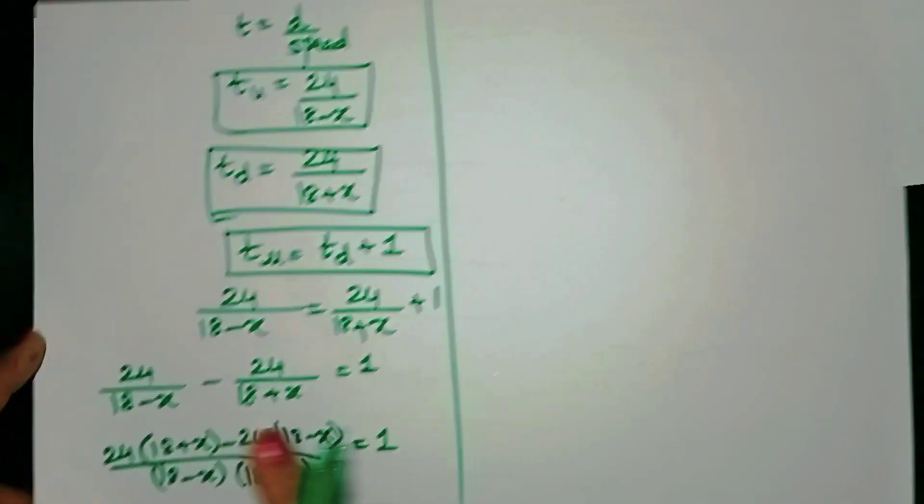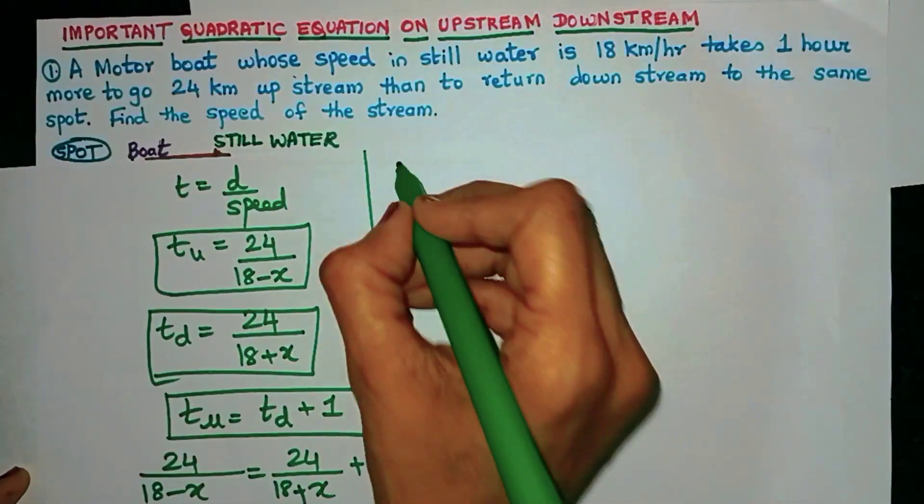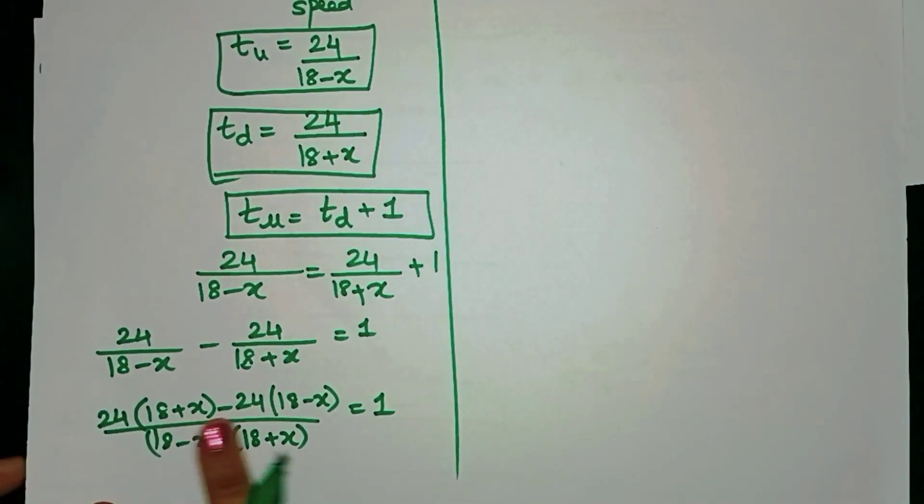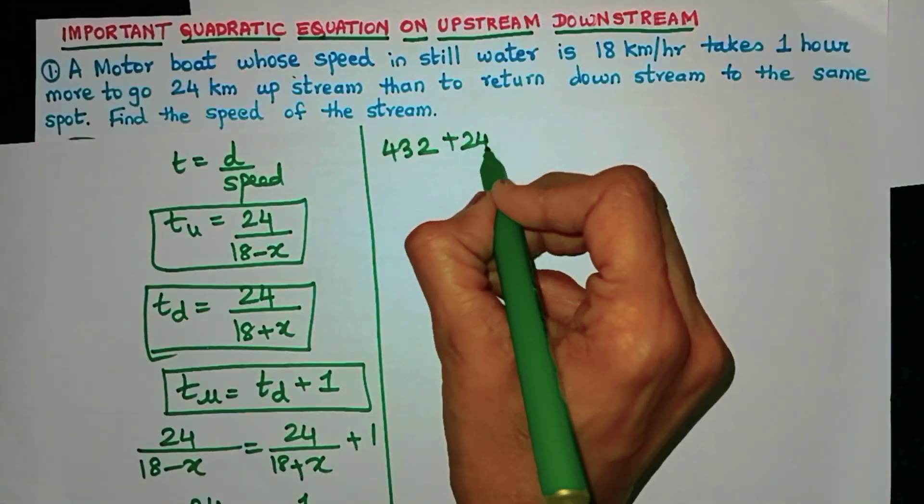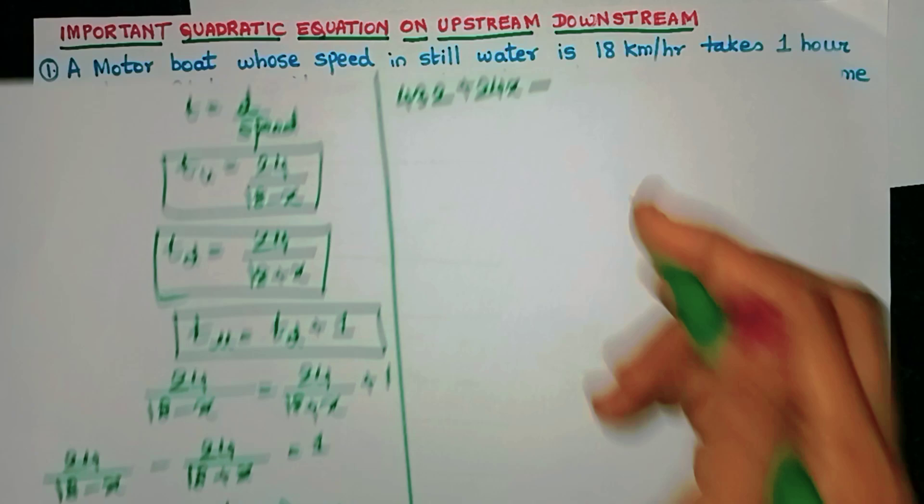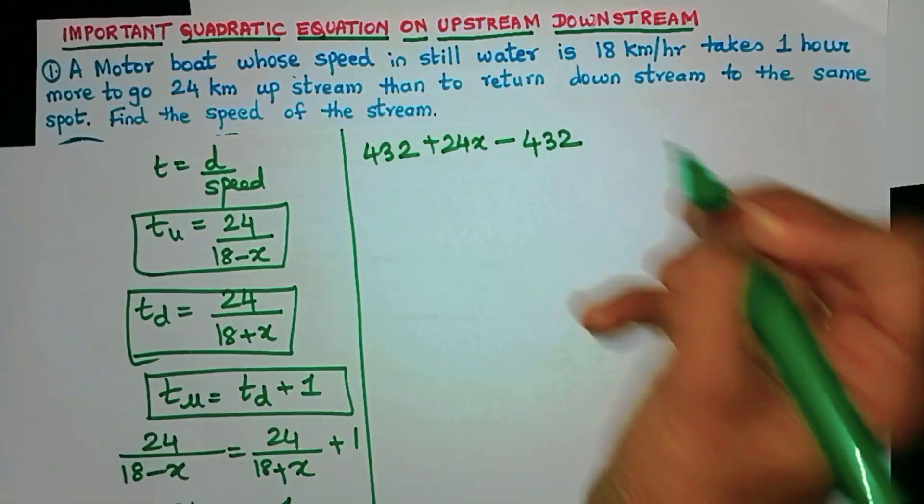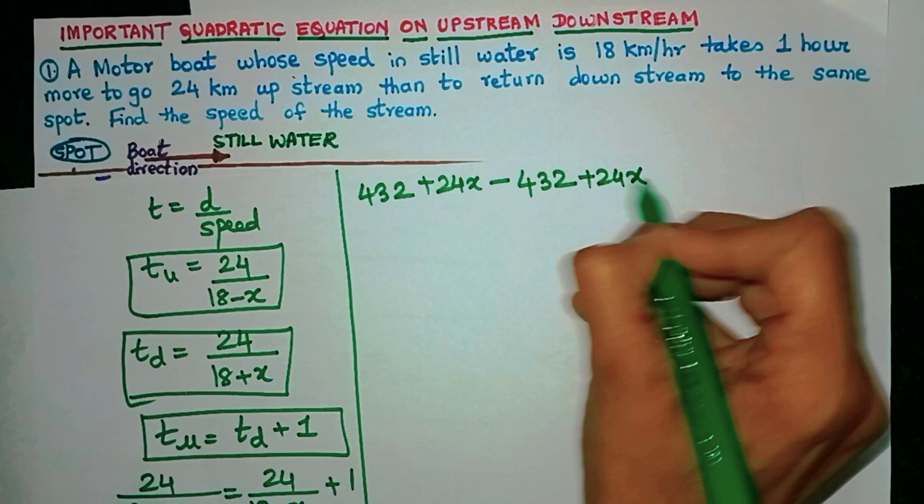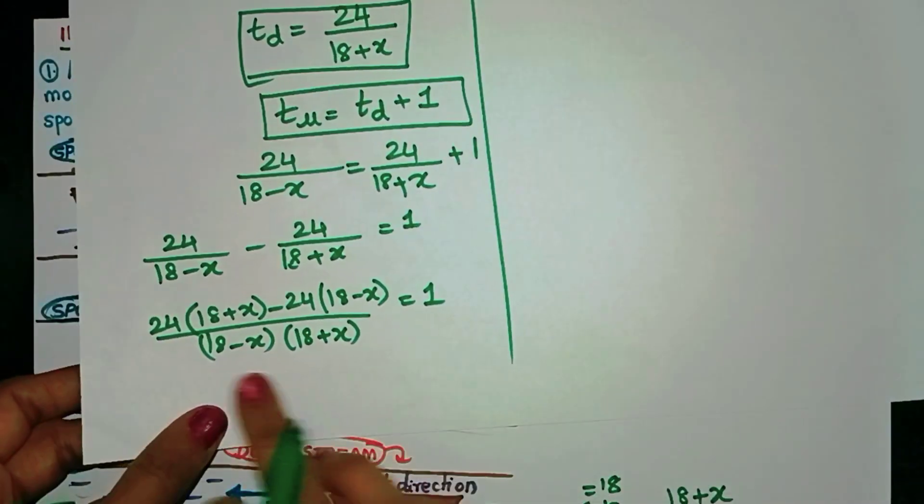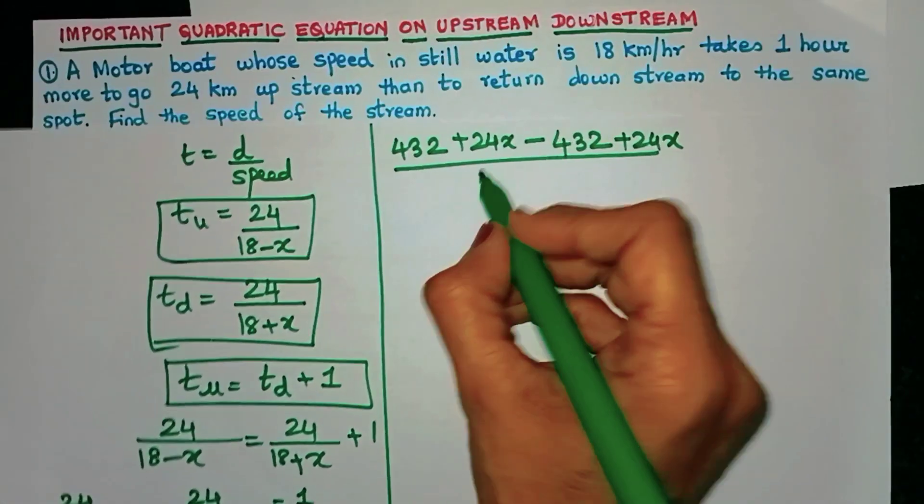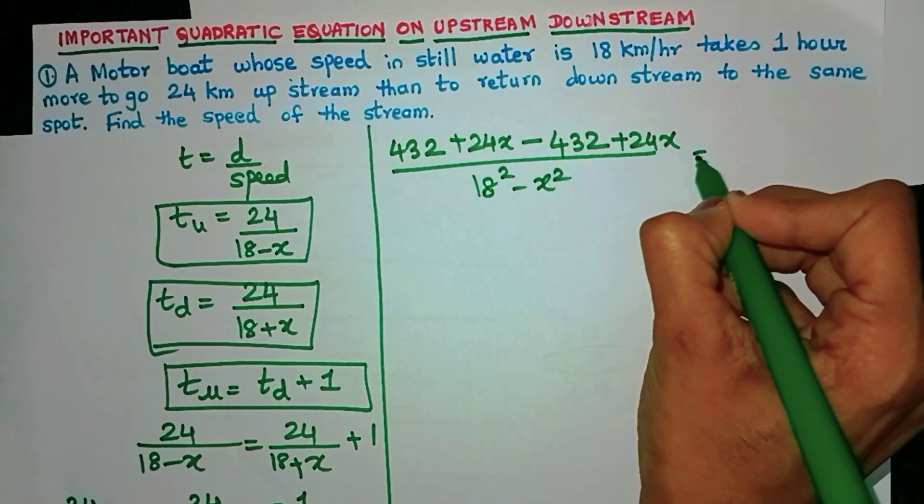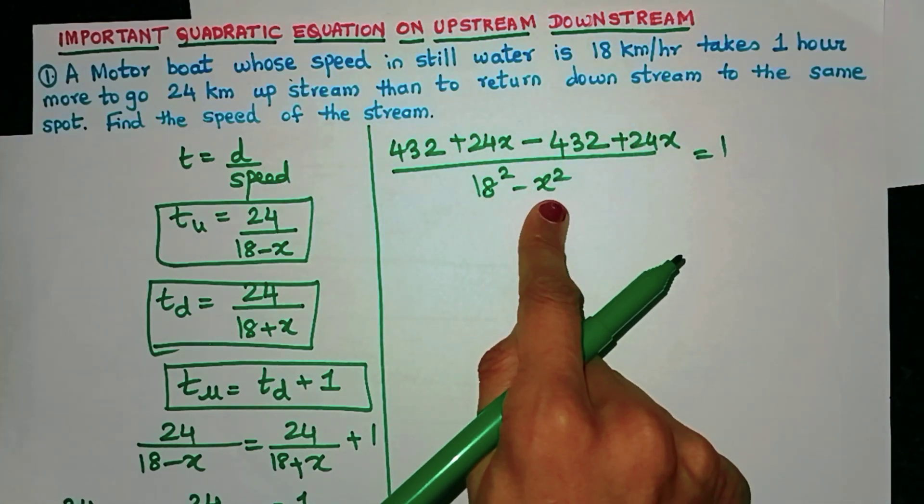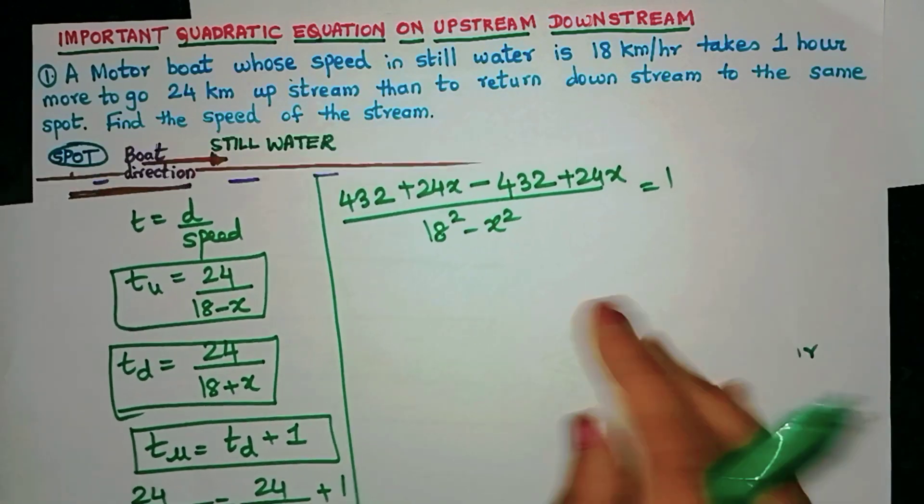24 into 18, I have already calculated, it's coming to 432. So 432 plus 24x minus 24 into 18, that's another minus 432 plus 24x. This is the numerator and the denominator is 18 square minus x square. Can you tell me what identity I have used? A square minus b square is a plus b into a minus b.